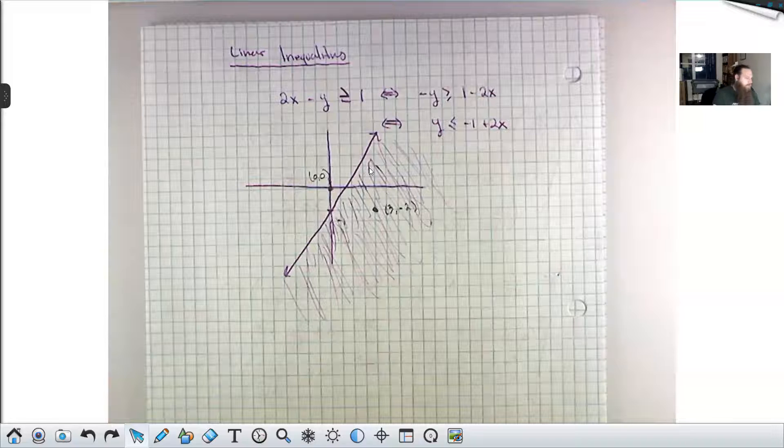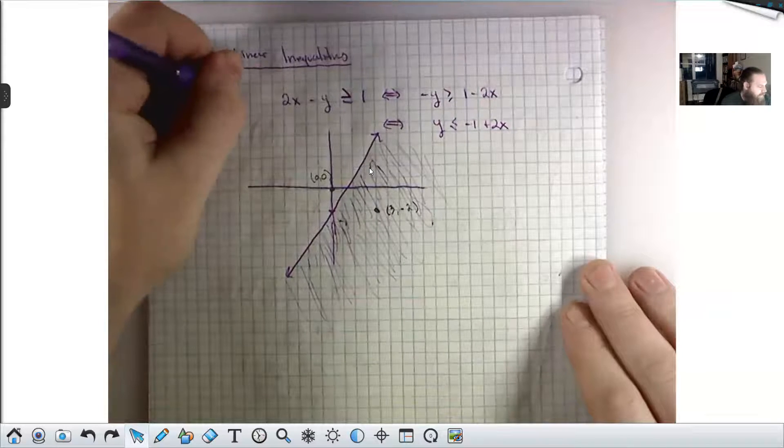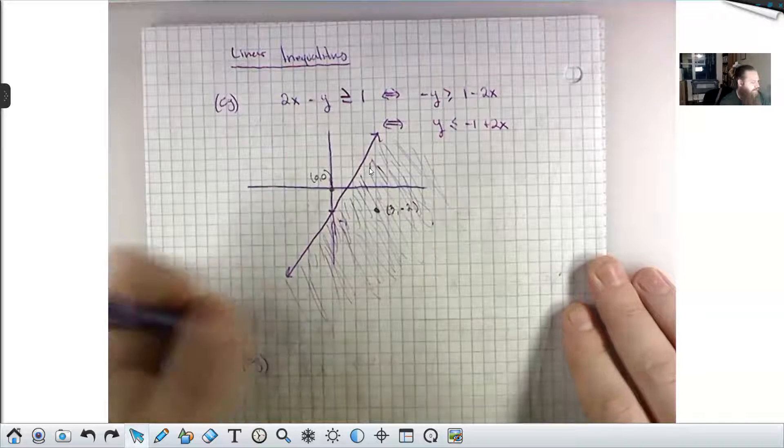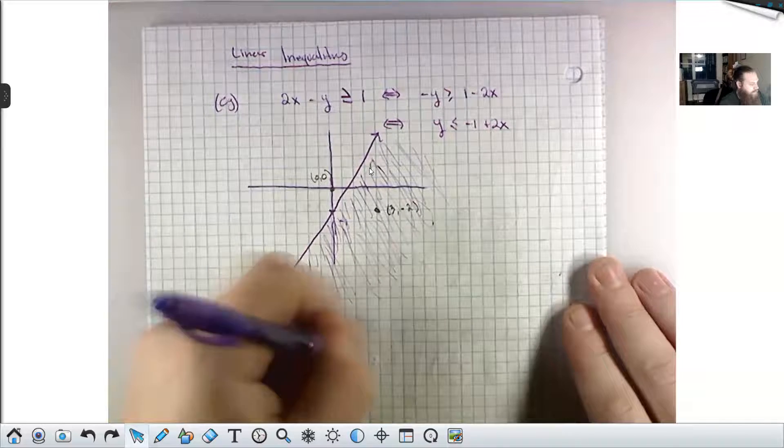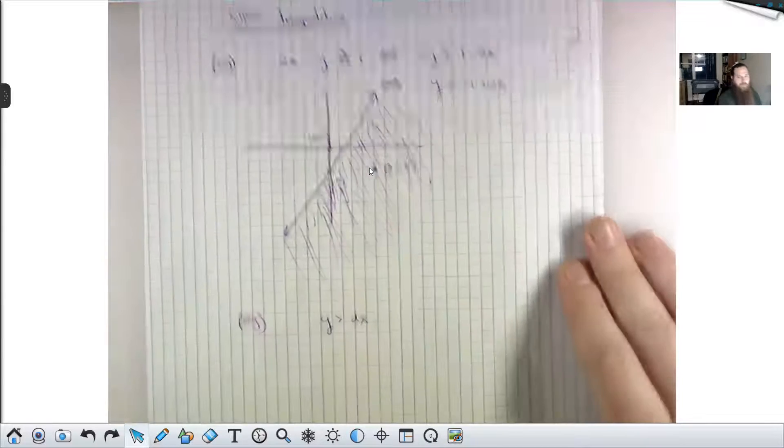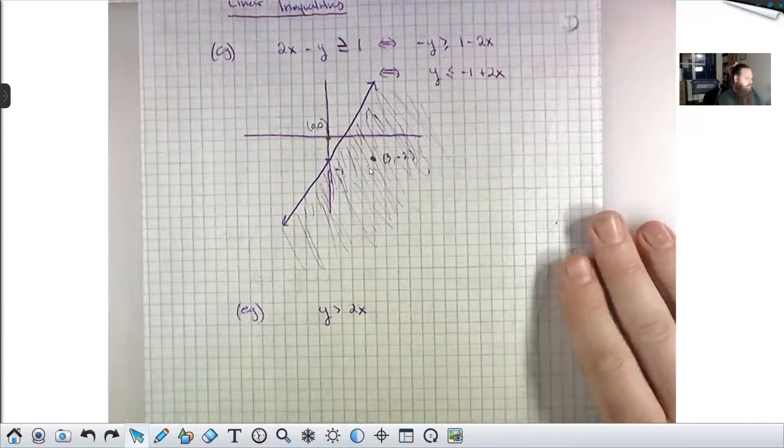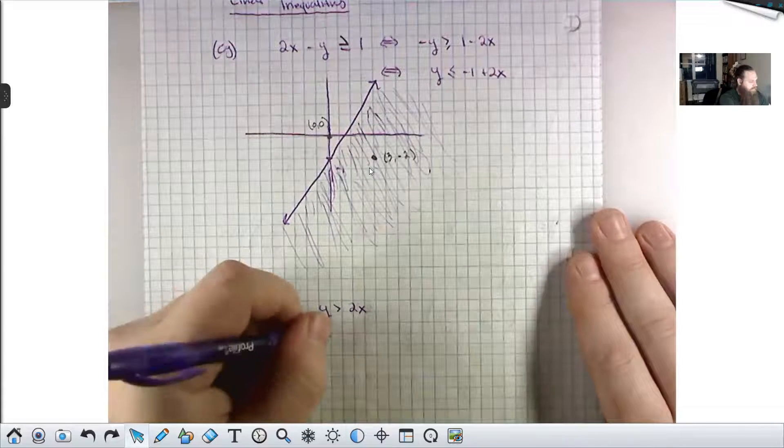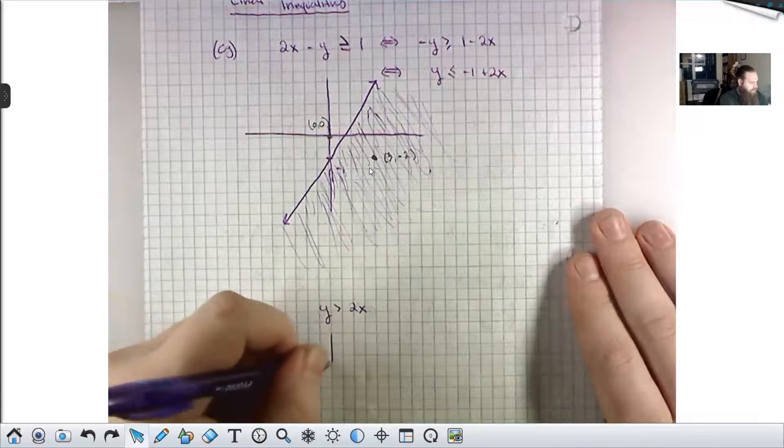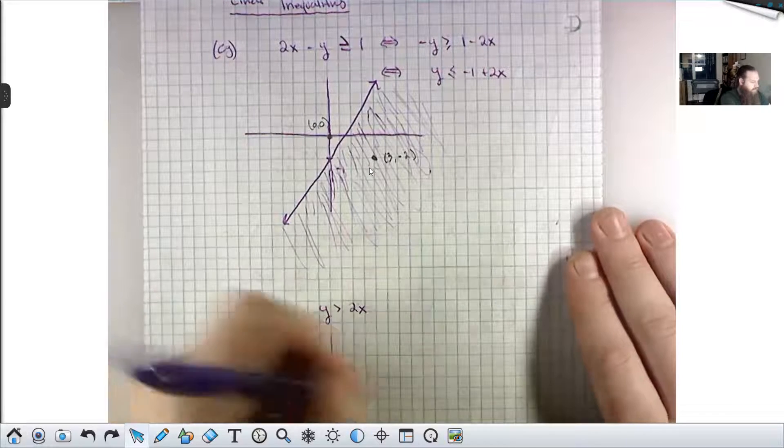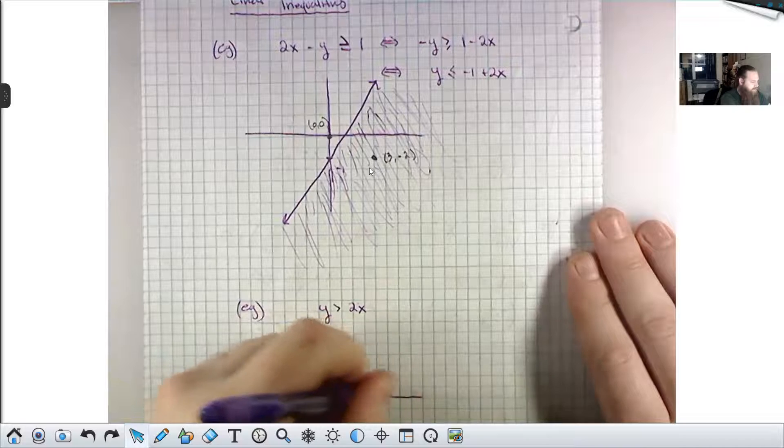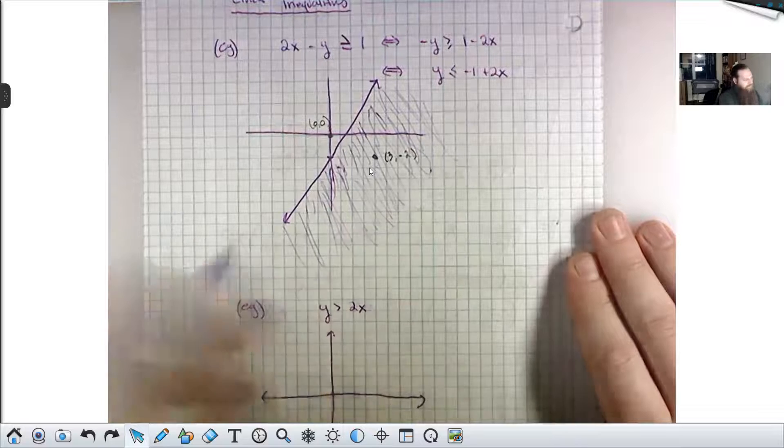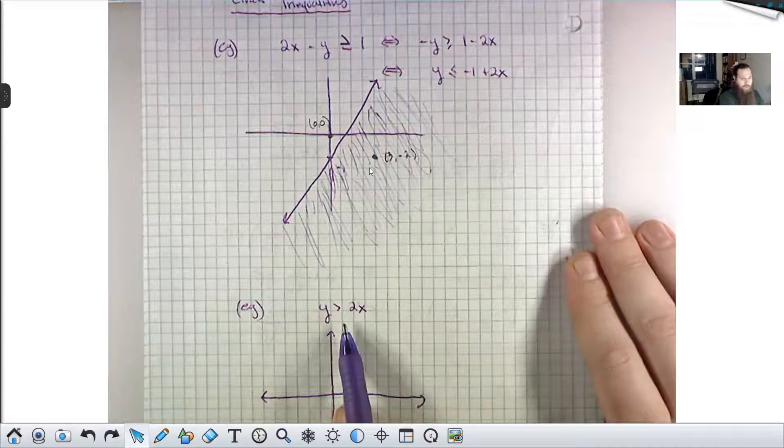On the other end, if we have something like, let's make this easy, how about y is greater than 2x at least? If your inequality, when you simplify it or solve for y, gets you this, then we draw the line y equals 2x. But with a small caveat here, this is a strictly greater than.